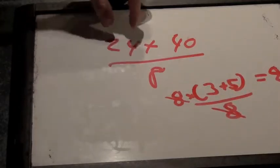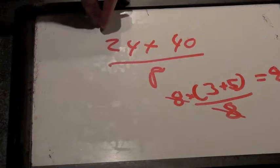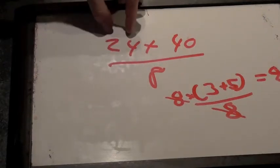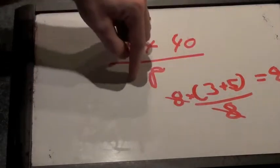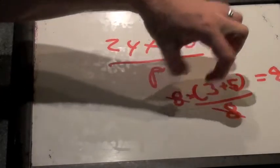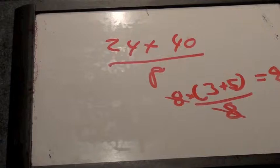Okay. So I can factor an 8 out of the top. So I get 8 times the quantity, this is 8 times 3, this is 8 times 5. So I get 8 times the quantity, 3 plus 5, divided by 8. The 8's cancel. And I'm left with a? 8. Okay.